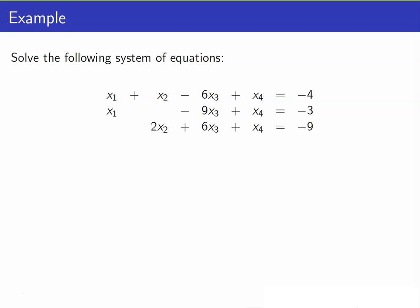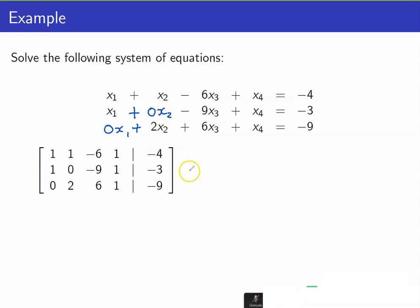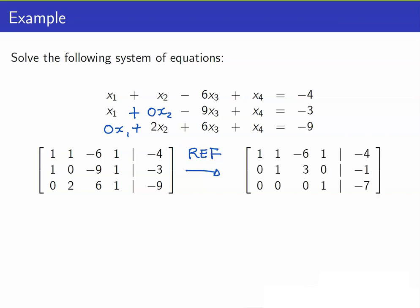Suppose we have our system of equations here. The first step that we need to do is to write down its augmented matrix. Recall that we have missing variables here, so don't forget to include 0. We have 0x2, and 0x1. If we now record the coefficients and the constants, we have our augmented matrix. If we reduce this matrix to its row echelon form, we will obtain the following matrix.